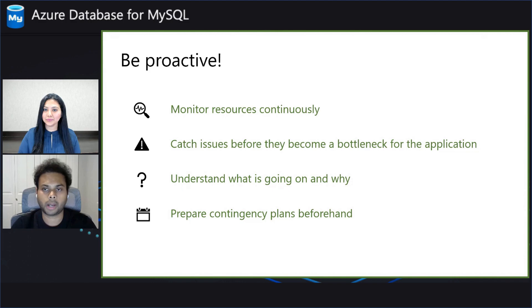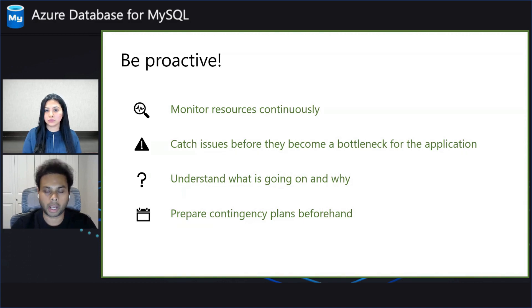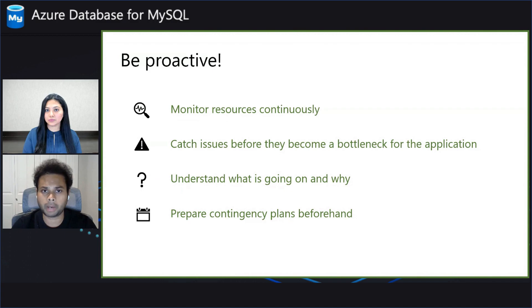Besides that, there are other things you need to do to be proactive and understand all the resources in your application stack. Things such as baselining performance benchmarks against each resource — for example, on the database side, you need to run benchmarks to understand how the database behaves under normal workload as well as peak workloads. That way you can gauge whether you have adequately provisioned resources so you are prepared when a high number of requests come from the application side. Besides that, always be prepared with a Plan B alongside your main Plan A.